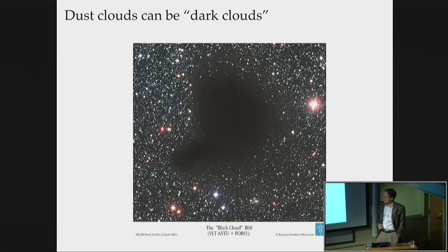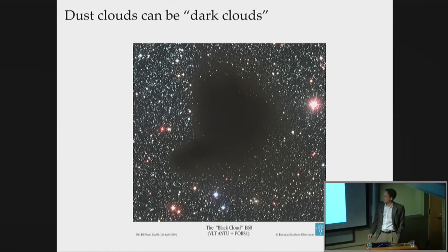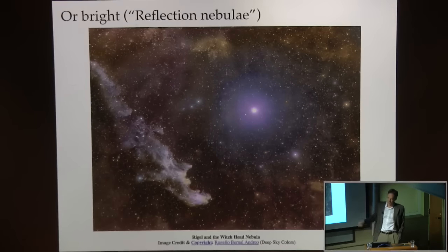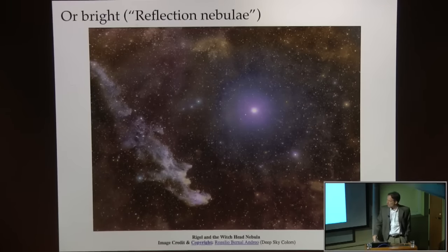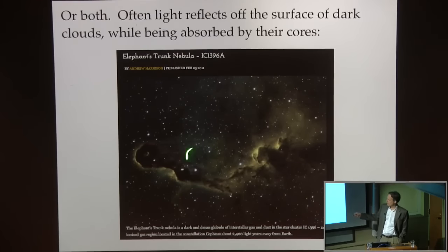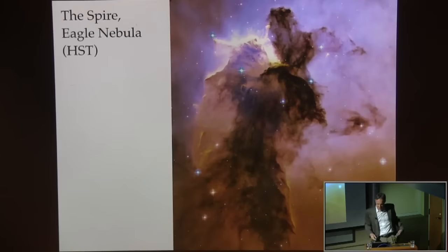Here's the poster child black cloud, Barnard 68 — from a survey of dark dust clouds done about 100 years ago. You can't see any stars through this dust cloud. There are also reflection nebulae: if there's a bright star next to the dust, the light reflects off it and the dust can look bright. This is a piece of the Witch Head Nebula. In general, both things are going on — some dust is black when you're trying to see stars through it, but it also reflects light off stars buried in its outer envelopes. If someone asked you to tell them exactly how much dust is along each line of sight by looking at an image, you can't really do that.